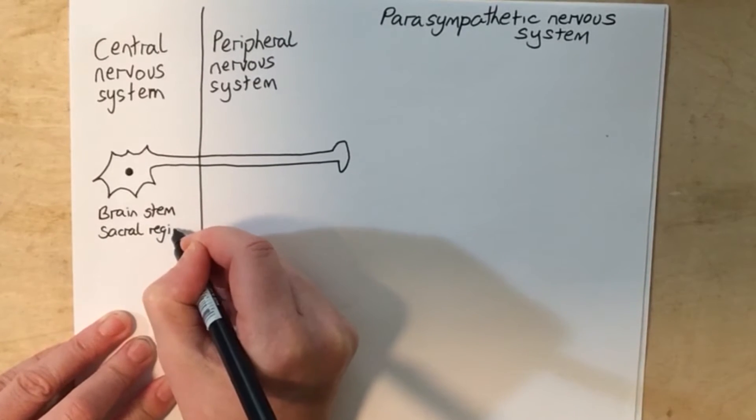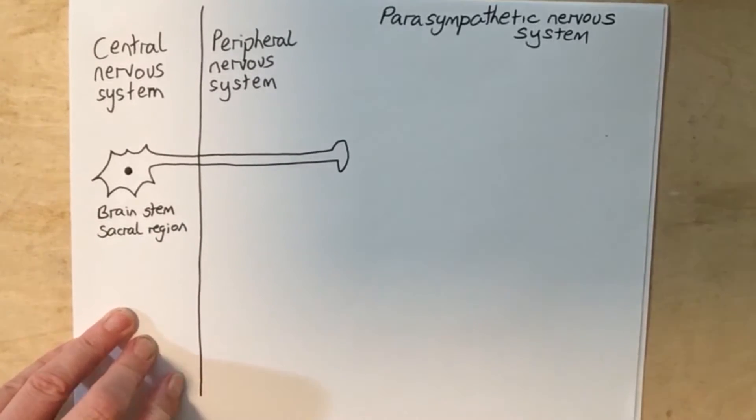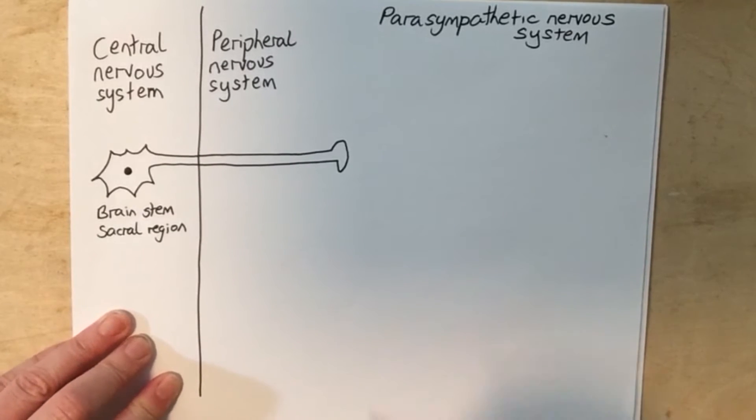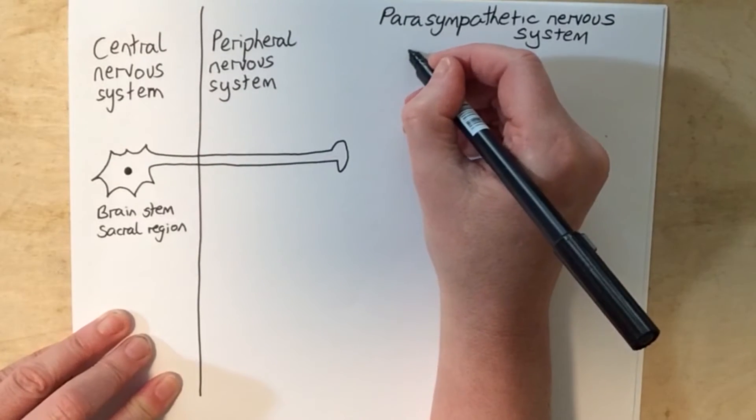And since these pathways emerge from the cranial region or the sacral region, the parasympathetic nervous system can also be referred to as the craniosacral division.